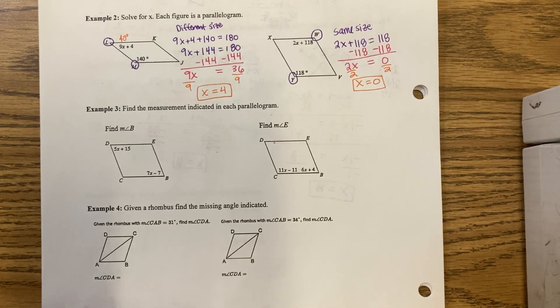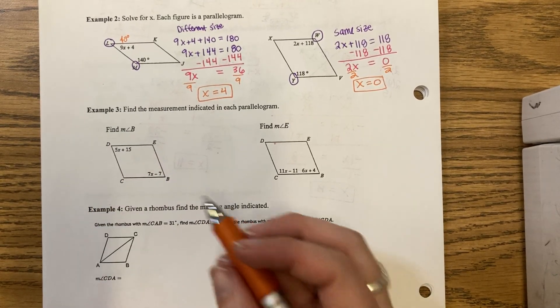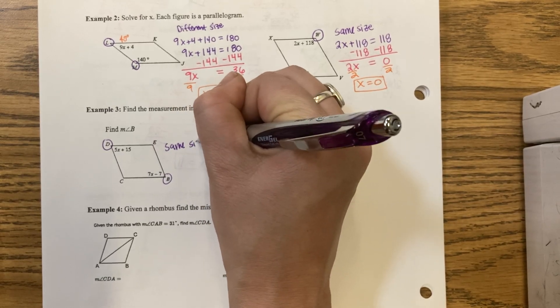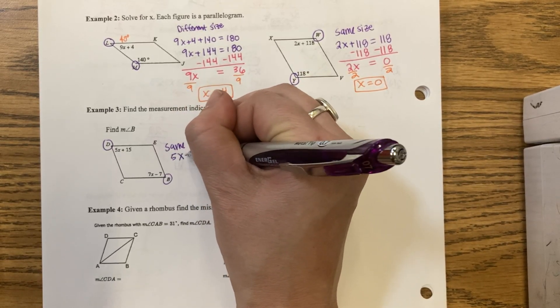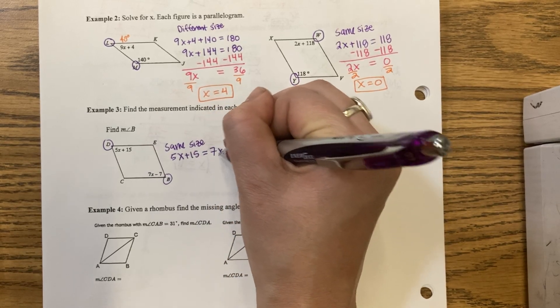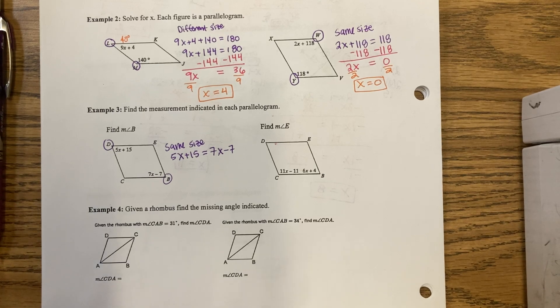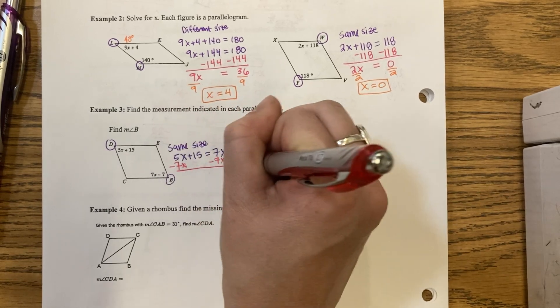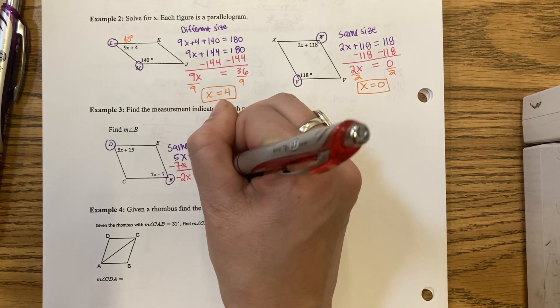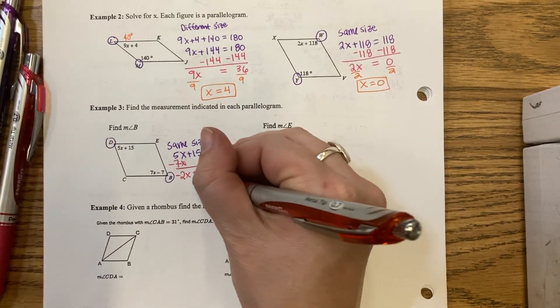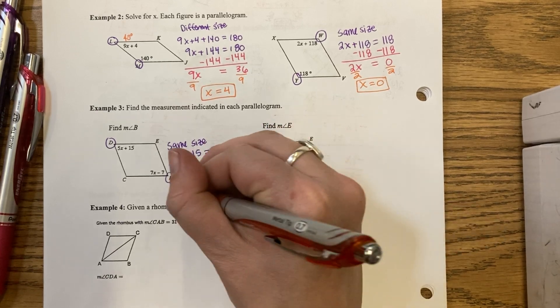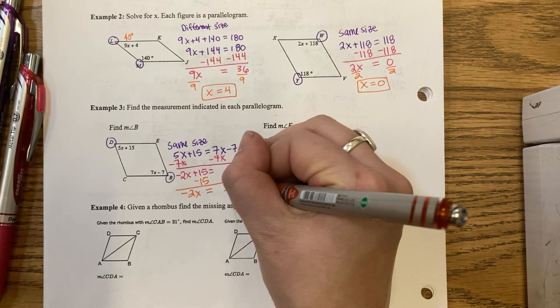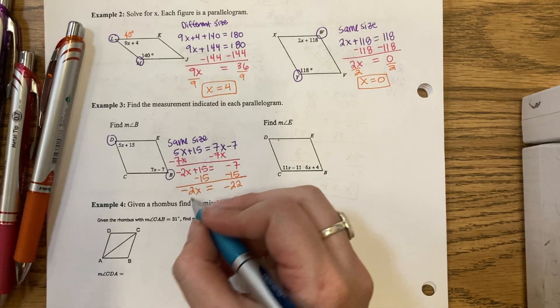Example 3. Find the measurement of angle B. I am given D and B. They are the same size. I set them equal. I am going to minus the 7x. That gives us negative 2x plus 15 equals negative 7. Minus the 15. Negative 2x equals negative 22. Divide. X is an 11.